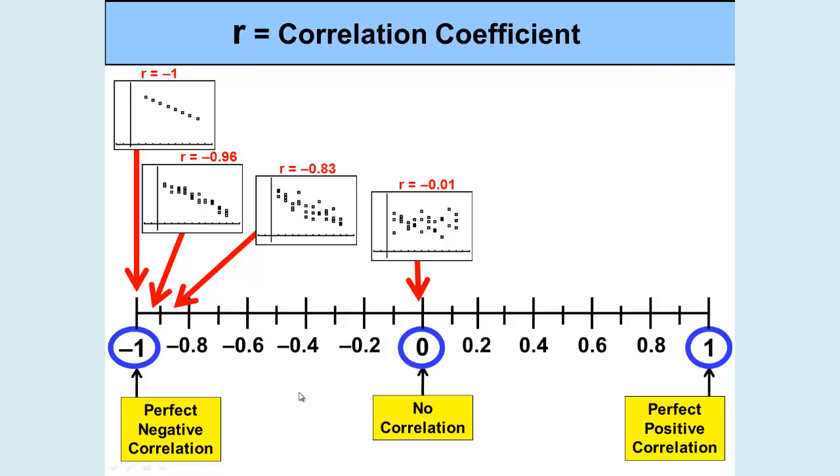Next, we'll go to an R equaling negative 0.01. And we can see that that's approaching a slope of 0. And we can see that there is very little linear relationship here as the slope approaches 0.